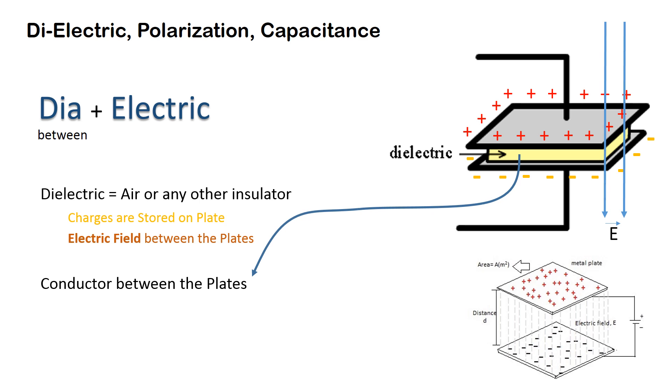If you put a conductor between the two plates, the charges will flow between the plates. We know that there is no electric field in a conductor, so there is no electric field between the charged plates.